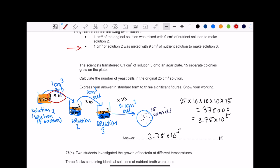The next part says the scientist transferred 0.1 cm³ of solution 3 onto an agar plate and 15 colonies grew. So we're not mixing things, we're just taking out 0.1 cm³ from solution 3, putting it on the agar, and 15 colonies of bacteria have been produced.